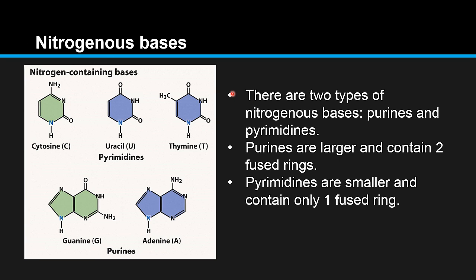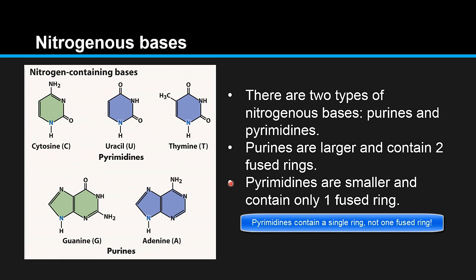There are two types of nitrogenous bases: purines and pyrimidines. Purines are larger and contain two fused rings. Pyrimidines are smaller and contain only one ring. The pyrimidines — cytosine, uracil, and thymine — are given the letters C, U, and T. The purines — guanine and adenine — have two fused rings and are given the letters G and A.